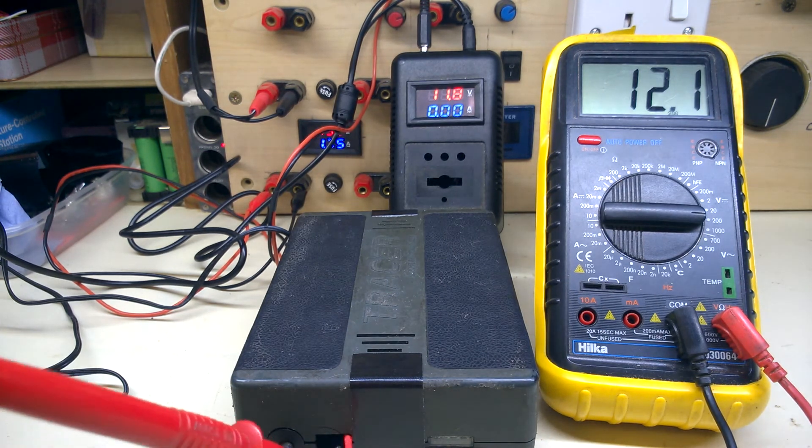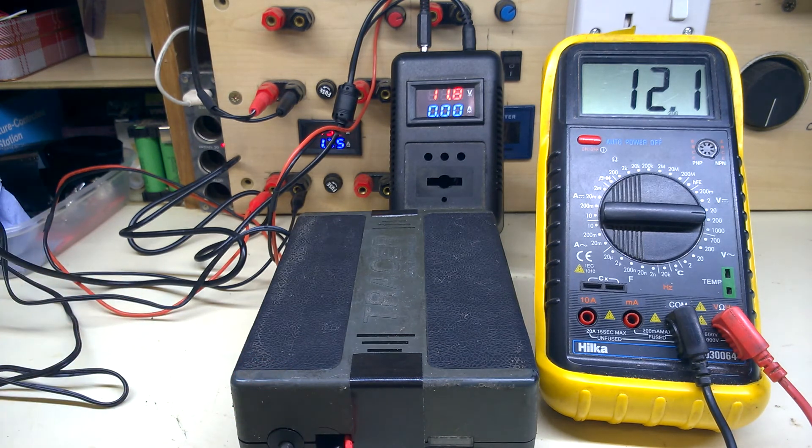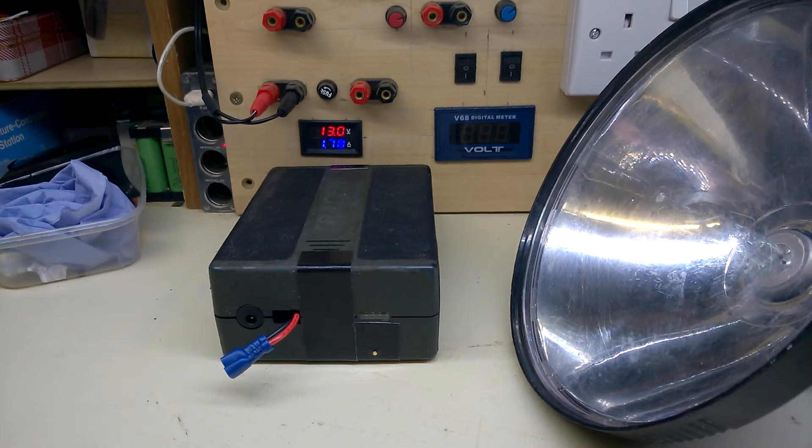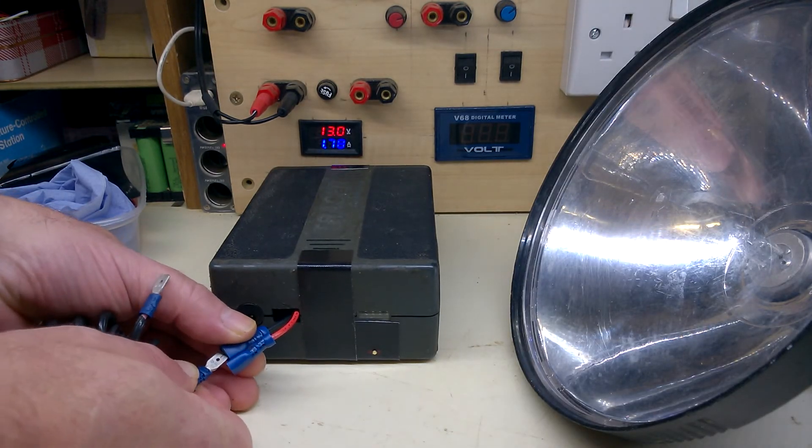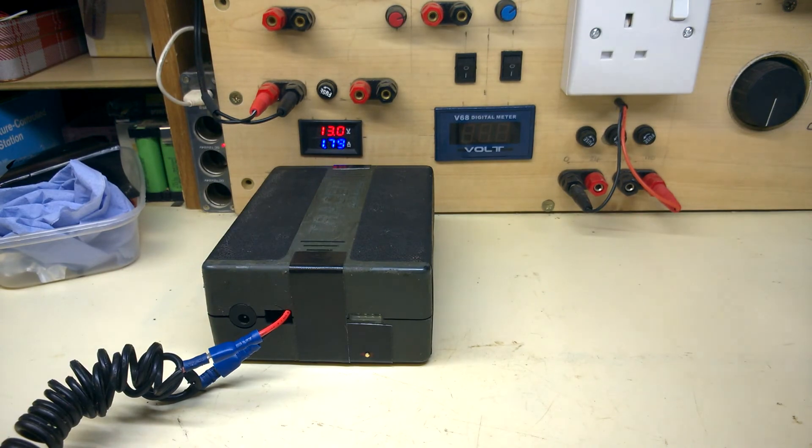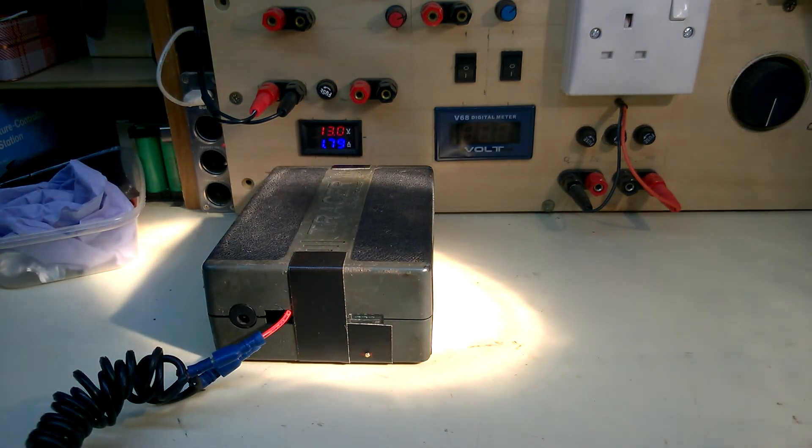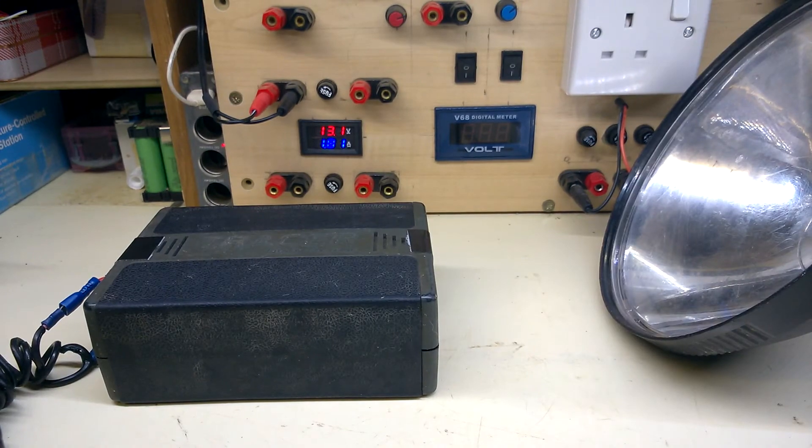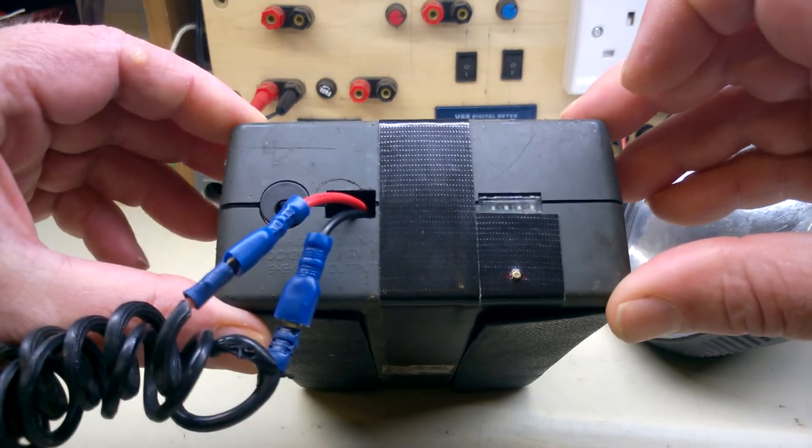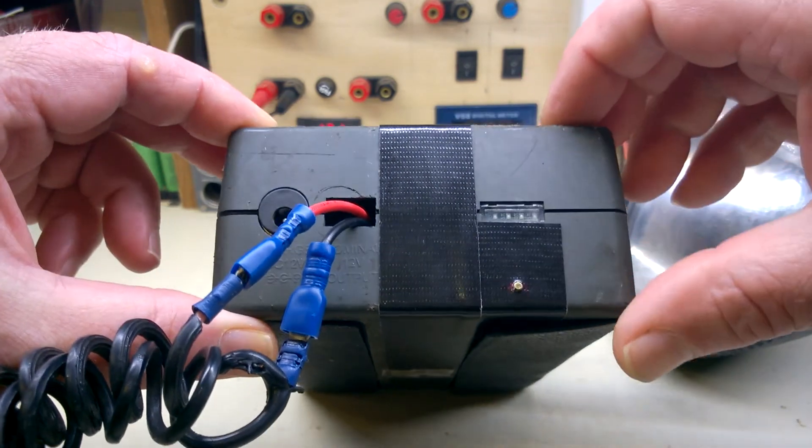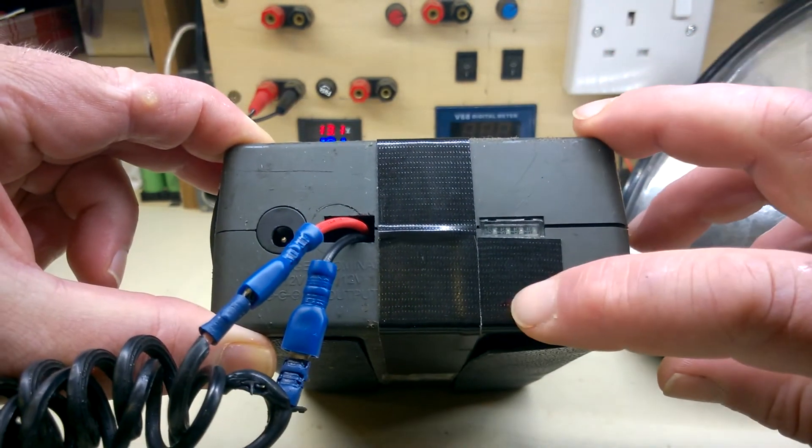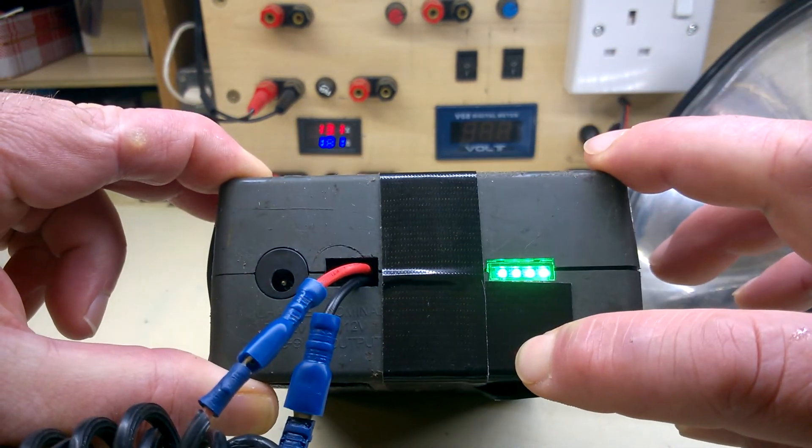I'm just probing the output leads. 12.1 volts. Plug in the lamp. Turn it on. Ooh, it's much brighter than the first time. I forgot to check the battery gauge when it's full. I need to put a bit more tape around this. This came wrapped in tape anyway. Keep your finger on. Four bars. Full.